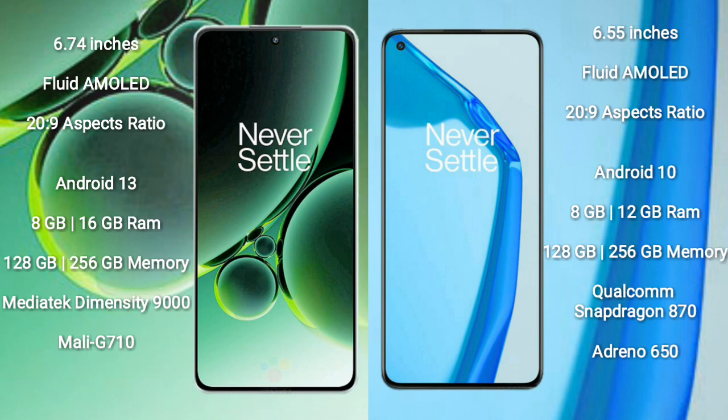OnePlus Nord 3 runs on the Android 13 operating system, while OnePlus 9R runs on the Android 10 operating system.